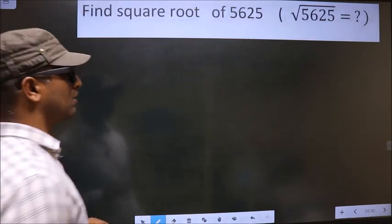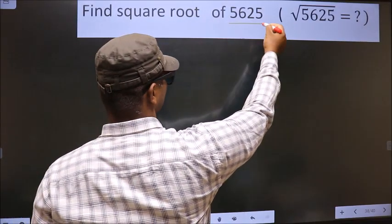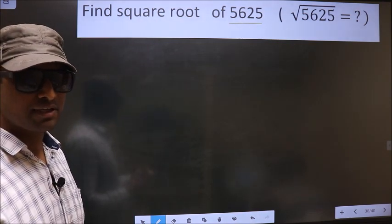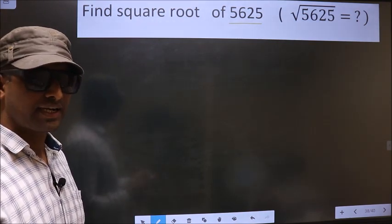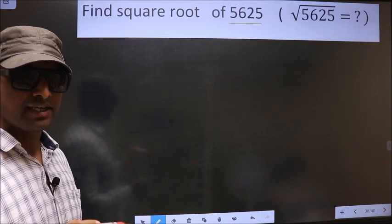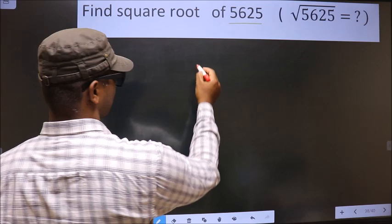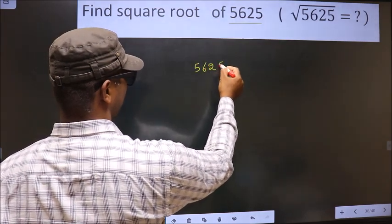Find square root of 5625. To find the square root by long division method, first we should frame it in this way. See, that is 5625.